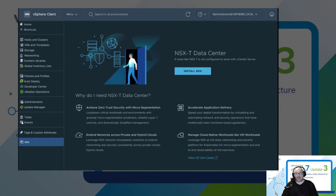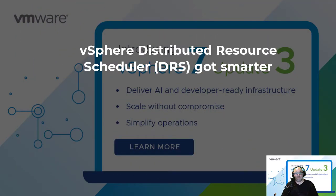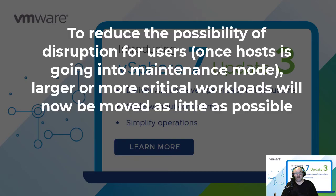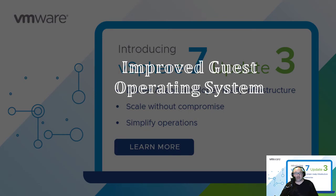This is a big thing as well. Touching on DRS — vSphere Distributed Resource Scheduler gets smarter in how it handles maintenance operations to reduce the possibility of disruption for users. When one host is going into maintenance mode, larger or more critical workloads will now be moved as little as possible.